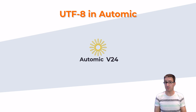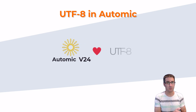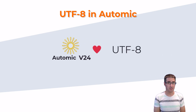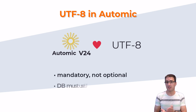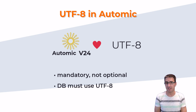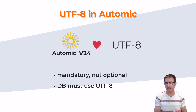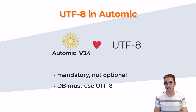Starting from version 24, Automic supports UTF-8. And I'll be blunt and say it straight out — that's mandatory, not optional. This means that you will only be able to run your version 24 Automic on a database with UTF-8 encoding. If your existing Automic database uses a different character encoding than UTF-8, then you need to take action.